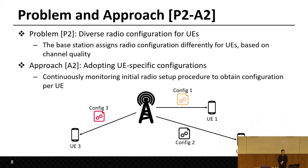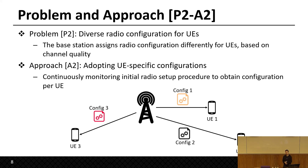The second problem is that the base station assigns radio configuration differently for each UE based on channel quality. Therefore, the LTE Sniffer needs to figure out the radio configuration to decode uplink and downlink packets. To solve this, LTE Sniffer continuously monitors the radio setup procedure to obtain configuration. Whenever the base station sends radio configuration to a smartphone, LTE Sniffer also captures and saves it to the database.